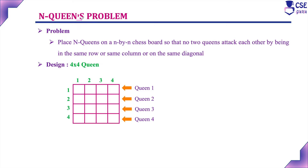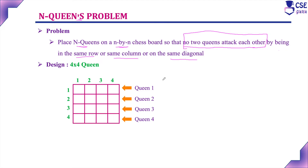With the help of the backtracking technique, we can implement the N Queens problem. The problem is: place N queens on an N×N chess board so that no two queens attack each other. The problem constraint is that no two queens attack each other by being in the same row, same column, or same diagonal. If you place one queen, you should not place another queen in the same row, same column, or same diagonal.